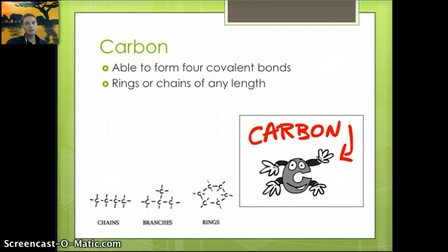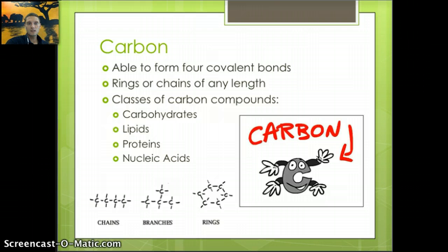Because of this ability, rings or chains of any length can be created—chains of carbons, branches of carbons, rings of carbon, and other things connected to these carbon atoms. This ability allows carbon to create all these different shapes and structures.